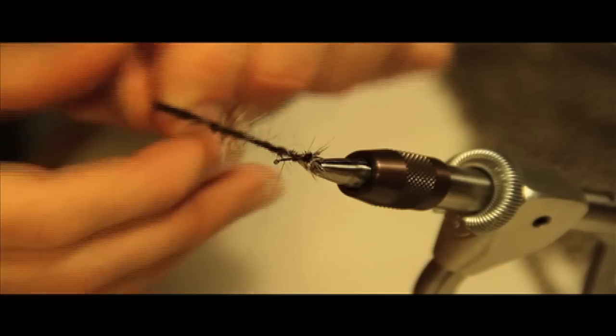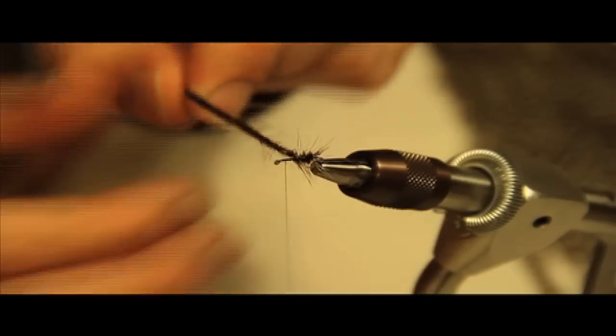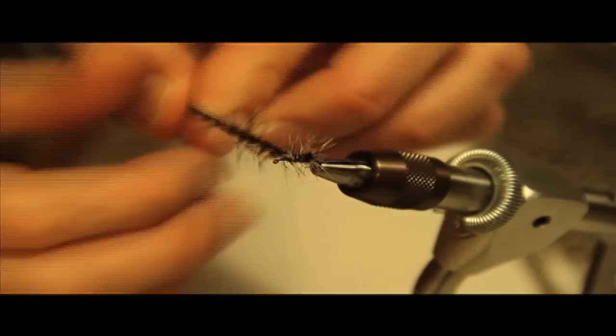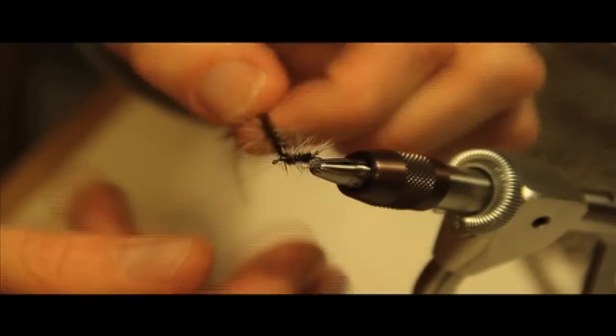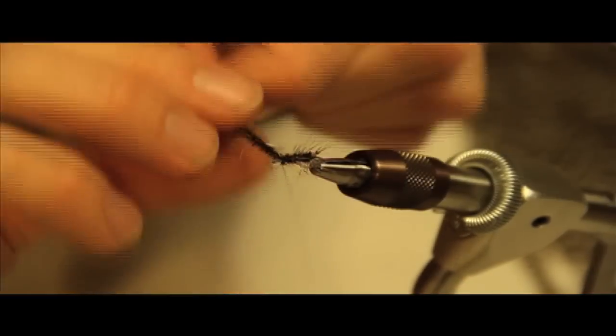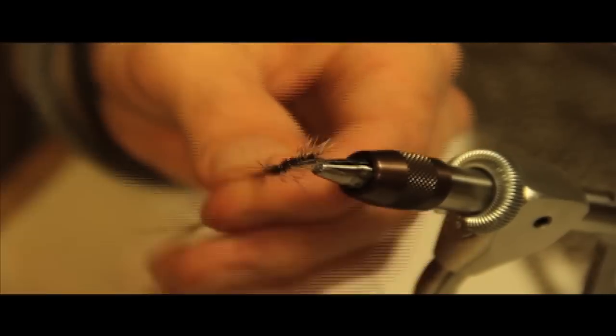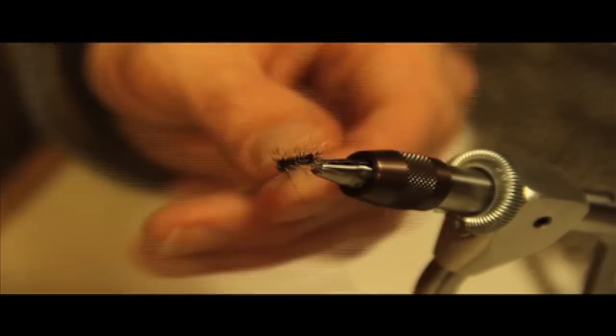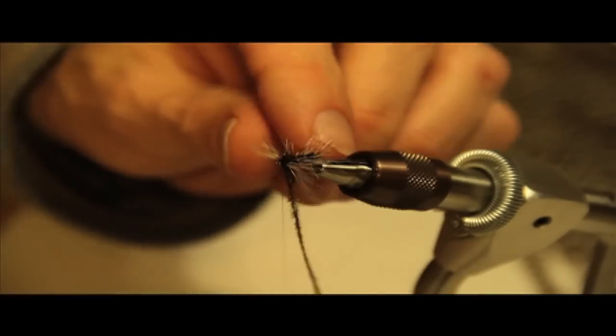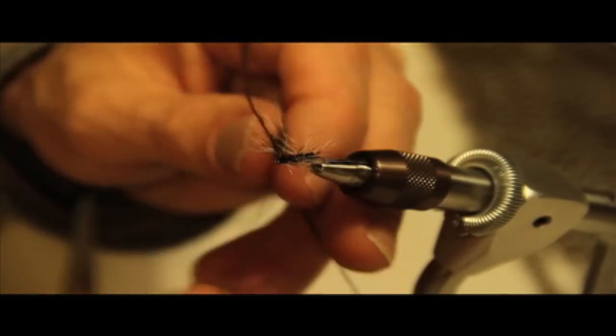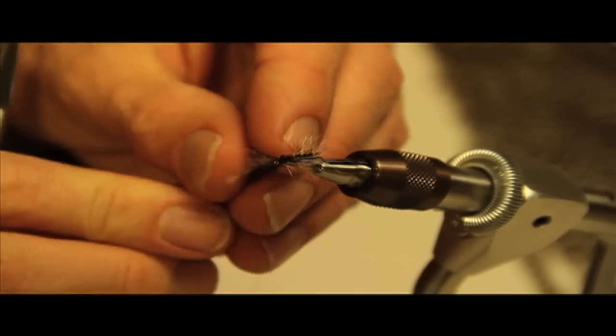Now first you've got to apply a little bit of pressure, but not too much, so as to not break the stem of the peacock. These are flies that shouldn't take forever to tie.